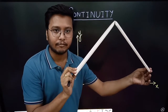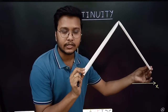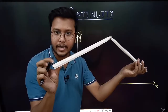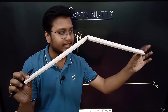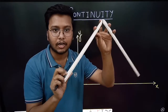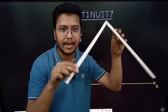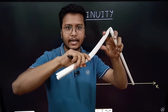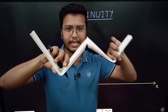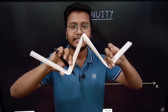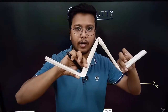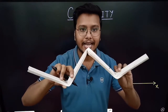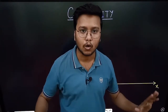Now imagine I am bending the function — this is a new function, I've changed the orientation. Is it still continuous? Obviously yes, because the endpoint here is connected with the endpoint at the tip. However much I bend it — inverted, horizontal, straight, or bent again — it is still continuous because the endpoints are connected. The electricity can flow from one end to the other, and hence it is continuous.